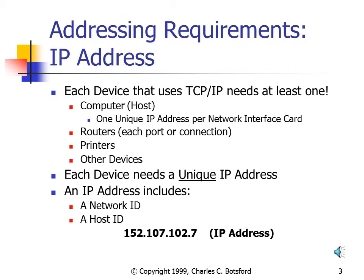An important thing to remember is that each IP Address contains both a Network ID and a Host ID. The Network ID is shared between all computers or all TCP/IP devices on the same physical segment. We'll talk about what a physical segment is coming up. Each device or host has a unique Host ID. For example, an IP Address like 152.107.102.7 — part of that is a Network ID and part is the Host ID.